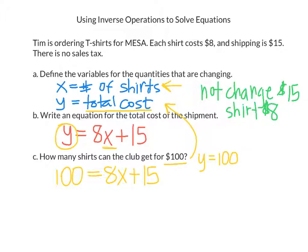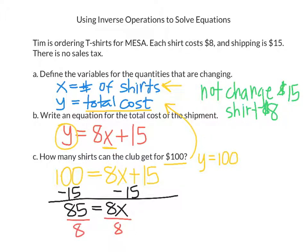So 85 equals 8X. And now I undo the multiplication by dividing both sides by 8. And you can see it's almost 11. So 8 goes into 85, 10 times with some left over. So sometimes it's appropriate to have a decimal. So 10.625 would be the decimal. But 10 shirts or 10 t-shirts, that's all they can get with $100.